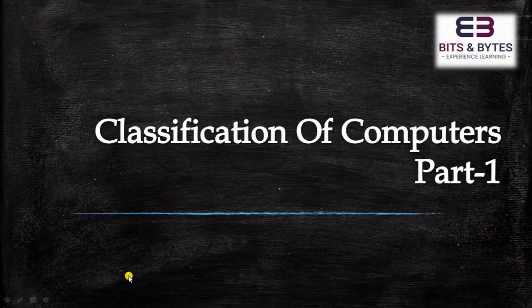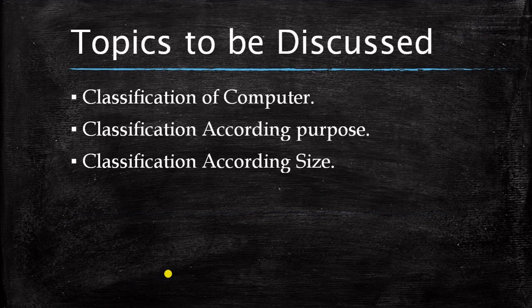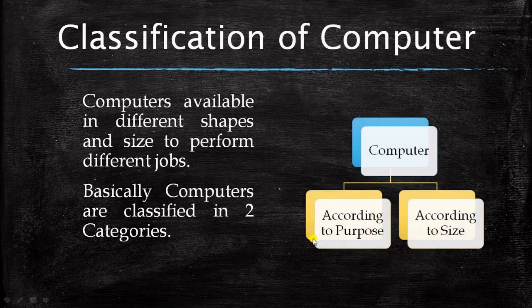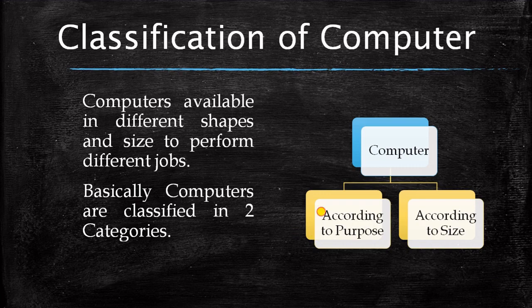In this video, the topics we are going to cover will be the classification of computers — classification according to purpose, and classification according to size. If you are watching this video, you already know what a computer is and what kind of work it does. Computers are divided into two categories because many organizations use computers for many purposes, and computers come in different sizes and shapes for different jobs.